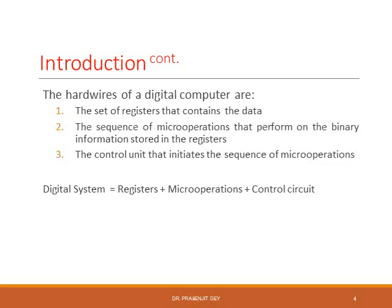The internal hardware organization of a digital computer consists of three modules or three parts. One is the set of registers that contain the data. Two, the sequence of micro operations that perform on the binary information stored in the register. And three, the control unit that initiates the sequence of micro operations. Thus, the digital computer is a combination of registers plus micro operations plus control circuits.